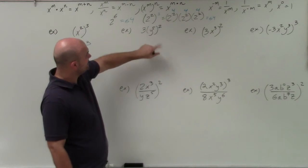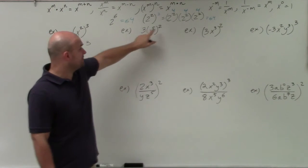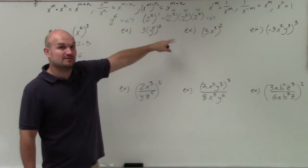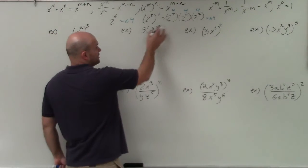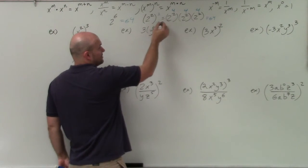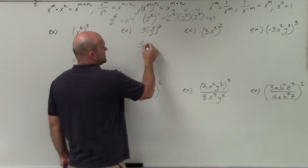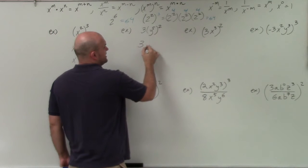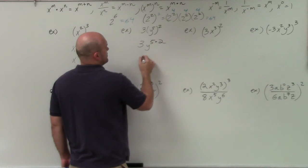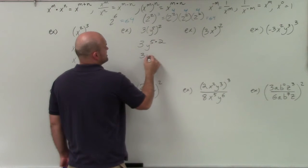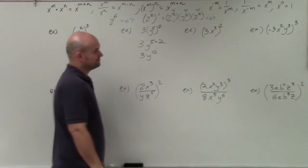Over here, you can see that I have a number on the outside, but that number is not being squared. So therefore we are not going to square that number. We're only going to work on the exponent that's being raised to the power. So therefore, that's going to be 3 to the 5 times 2, and that's going to be 3 to the 10th power.